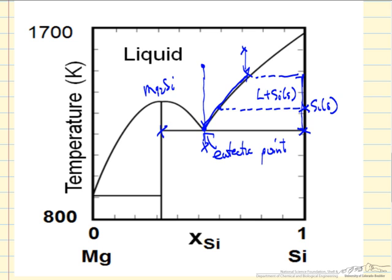Likewise, if we were to start over here and cool down, we would get the compound forming. We move along this line where we're enriching in silicon in the liquid phase until we get again to the eutectic point.